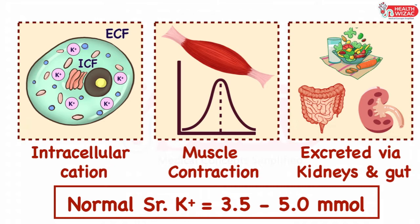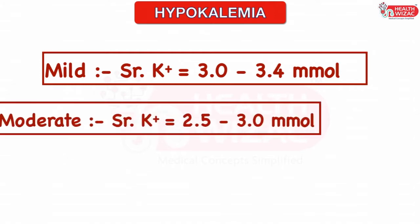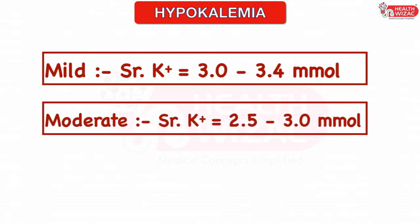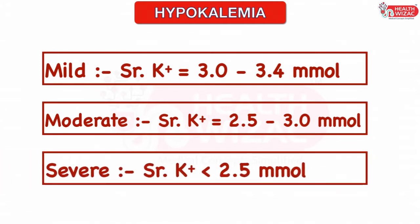Depending upon the level of serum potassium, hypokalemia can be differentiated into three categories: mild hypokalemia, that is serum potassium between 3 to 3.4 millimoles per litre; moderate hypokalemia, that is serum potassium between 2.5 to 3 millimoles per litre; and severe hypokalemia, that is serum potassium less than 2.5 millimoles per litre.